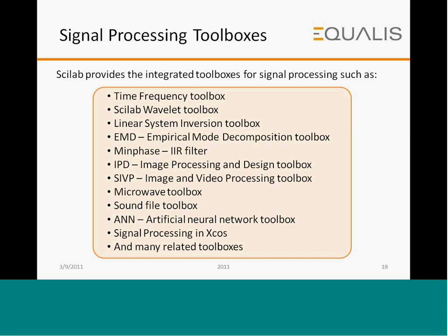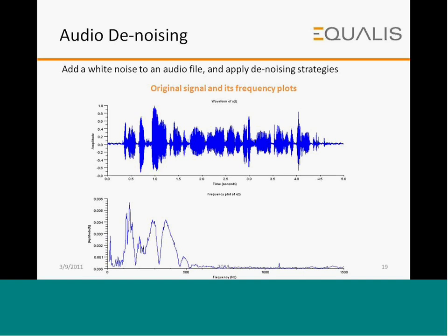There are many toolboxes available in Scilab for performing signal processing: the time-frequency toolbox, Scilab Wavelet toolbox, Linear System Inversion toolbox, empirical mode decomposition toolbox, infinite impulse response filter, image processing and design toolbox, Scilab image and video processing toolbox, toolbox for microwave and sound file data, and artificial neural networks. You can also perform signal processing in X-COS, the simulation environment in Scilab.